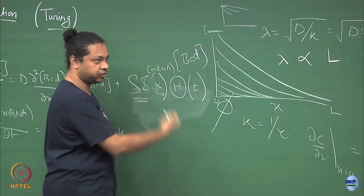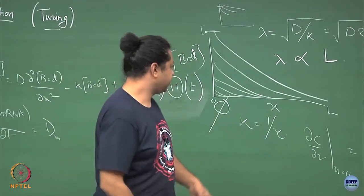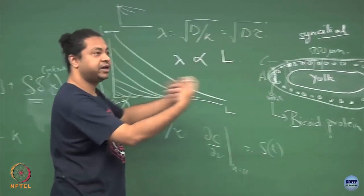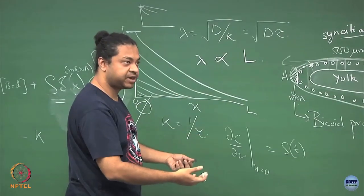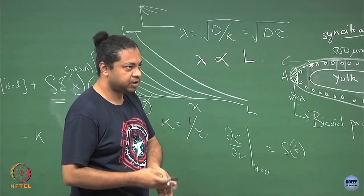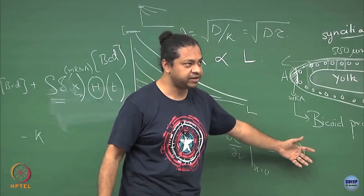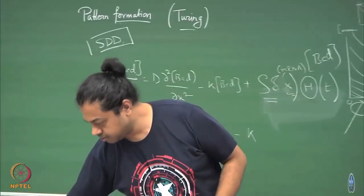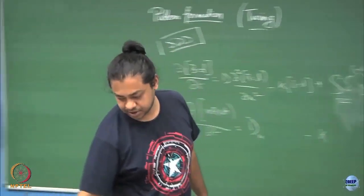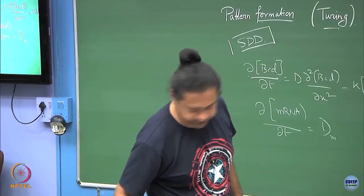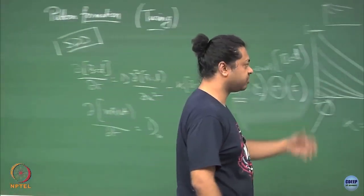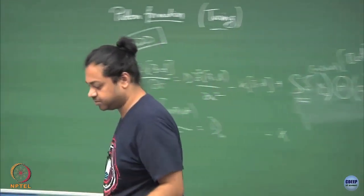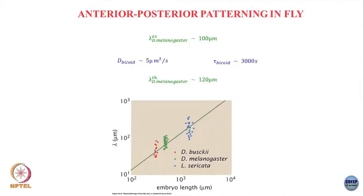There is a constant source at x equal to 0. You could say that more mRNA is being transcribed at some time and less at some other time - so the source strength itself varies. That would be an improvement on this model, but as far as I know there is no experimental data on mRNA transcription rates as a function of time. So people just take it to be constant.